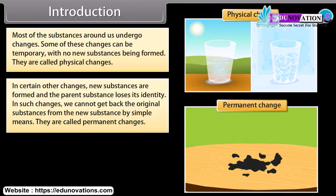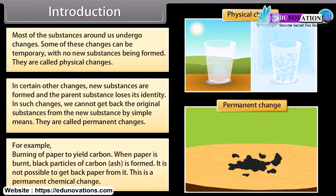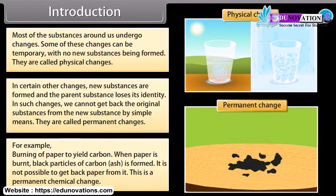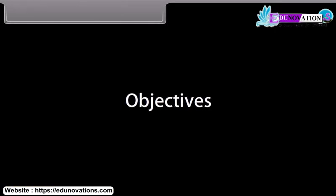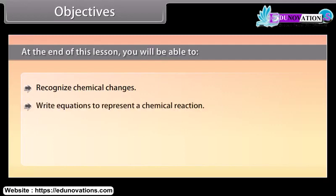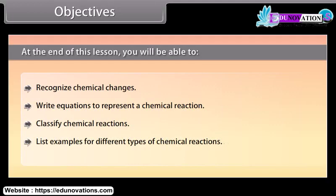They are called permanent changes. For example, burning of paper to yield carbon. When paper is burnt, black particles of carbon ash are formed. Now it is not possible to get back paper from it. This is a permanent chemical change. At the end of this lesson you'll be able to recognize chemical changes, write equations to represent a chemical reaction, classify chemical reactions, and list examples for different types of chemical reactions.